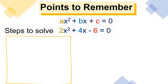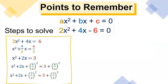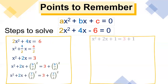This will be a step-by-step method. First, we have to transpose negative 6 and it becomes positive 6. Since a, b, c in our equation are divisible by 2, let's divide it and we get x squared plus 2x is equal to 3. Next, to complete the square, let's add (b/2) squared to both sides. Substituting the value of b, which is 2, we have x squared plus 2x plus 1 is equal to 3 plus 1.